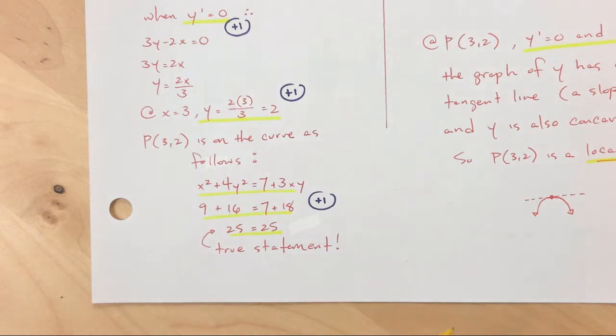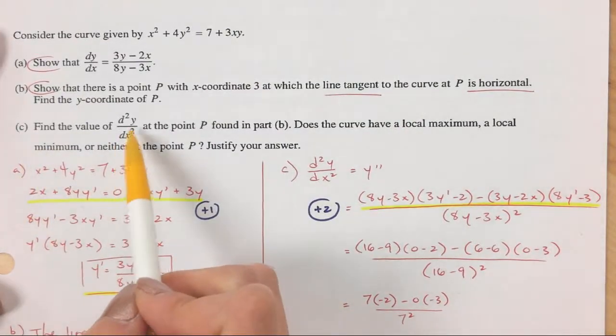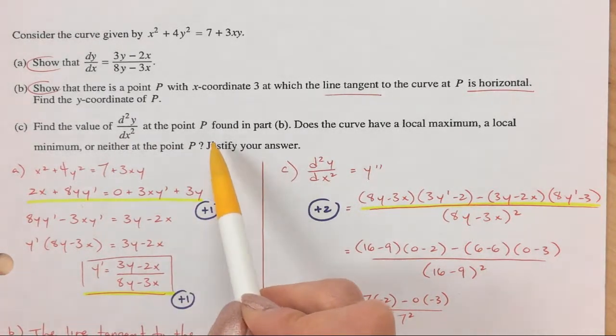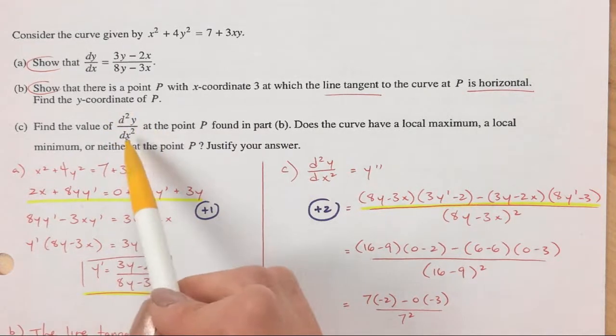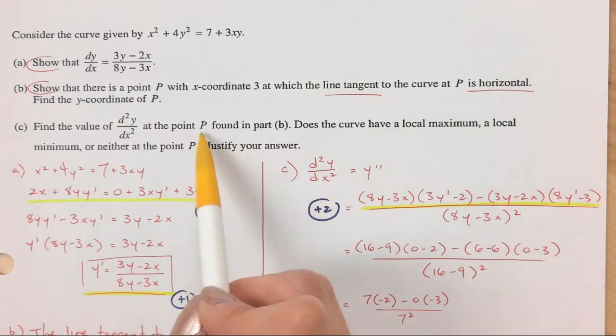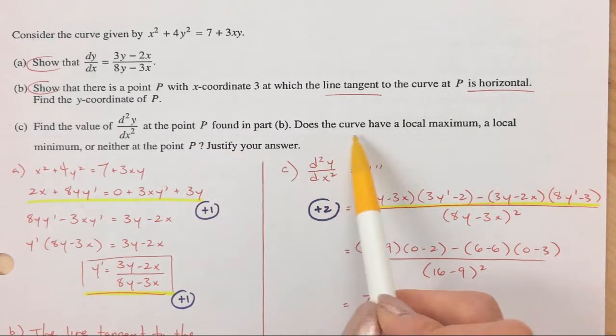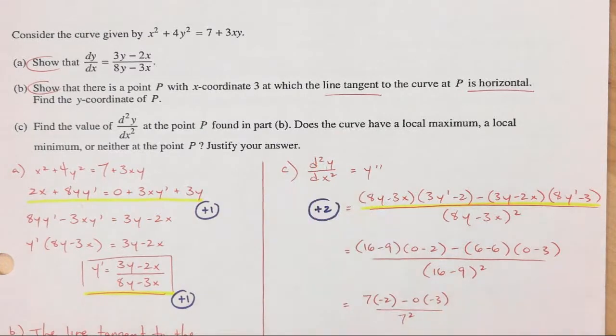Okay, so that is one, two, three, four, five points total for A and B. Okay, for part C, it says find the second derivative at point P that you just found for part B. Okay, so second derivative at three comma two. Okay, does the curve have a local max, local min, or neither? Justify your answer. All right. First part is second derivative.